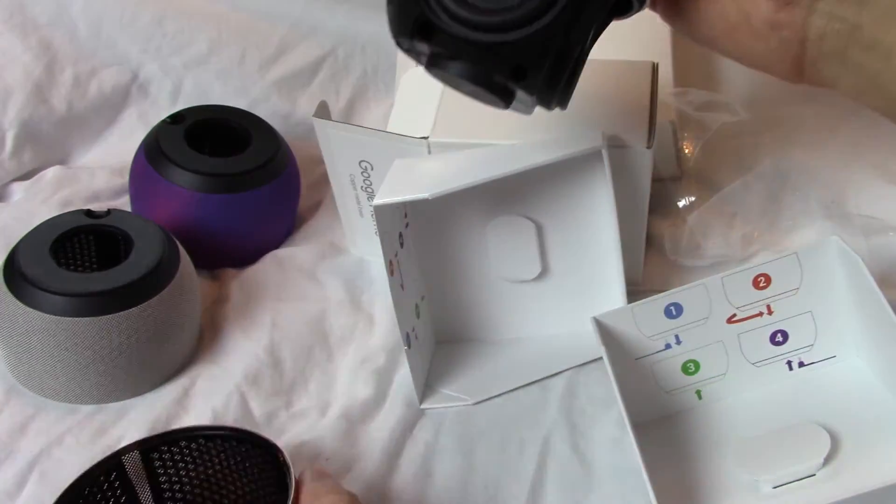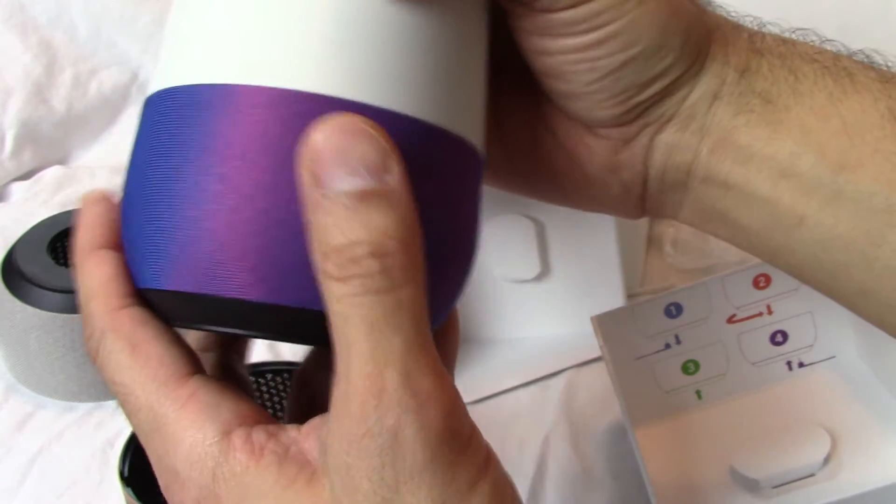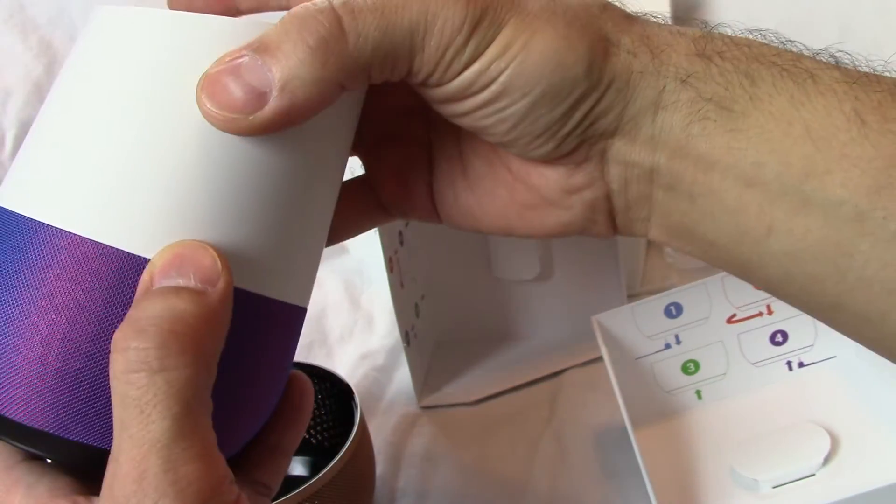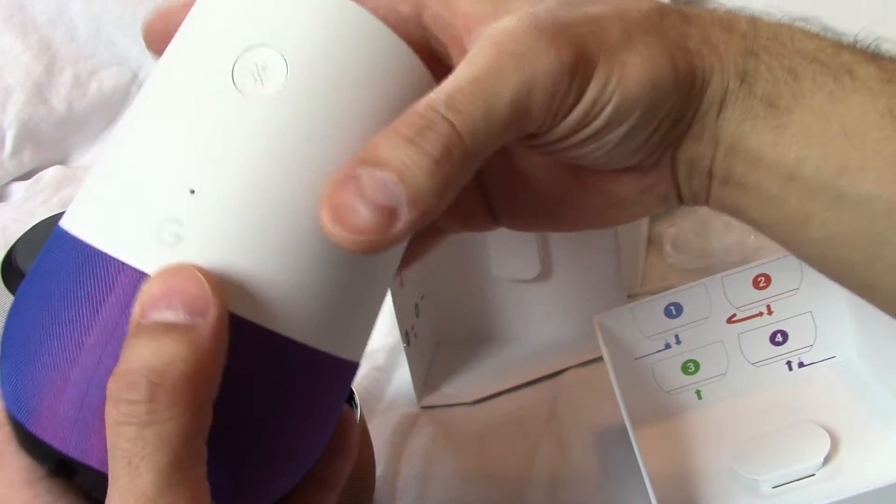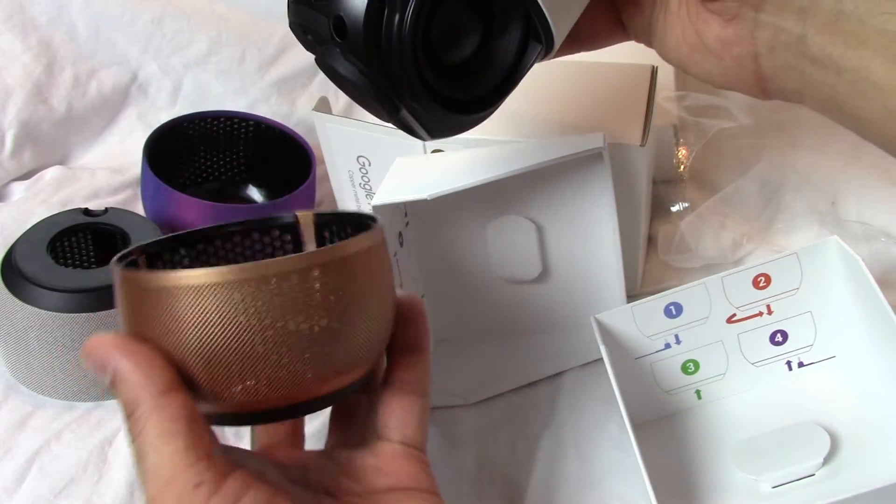Let's take a look at that violet one. Okay look at that, no gap, perfect seal. Now let's look at this copper one.